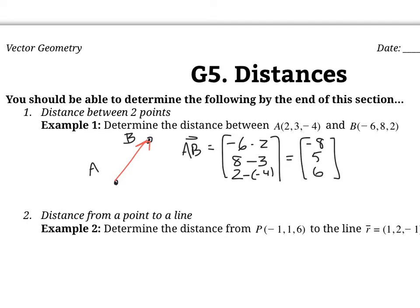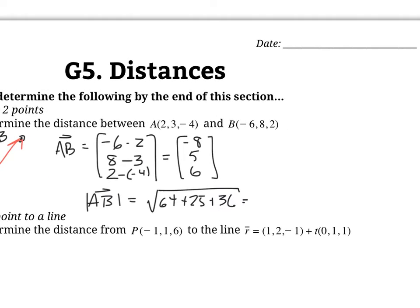Now to find the distance between those two points, we use the magnitude of vector AB, which is the square root of 8 squared plus 5 squared plus 6 squared — that's 64 plus 25 plus 36, which comes out to 125. So it's root 125, and we can reduce that by pulling out a 25, giving us 5 root 5. That is the distance between the two points — just the magnitude of the vector between them.